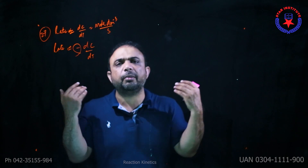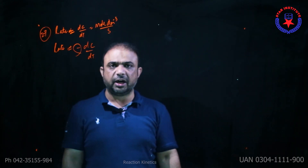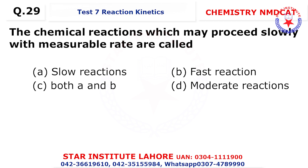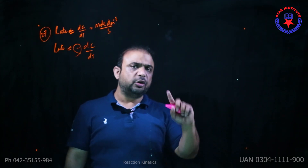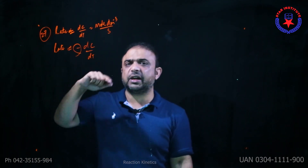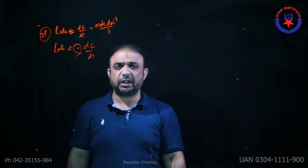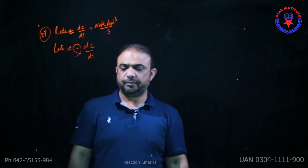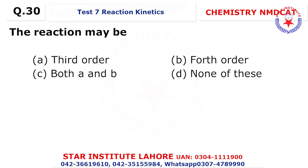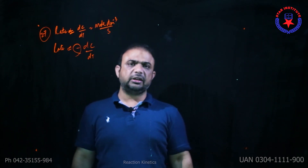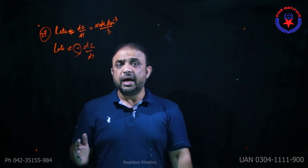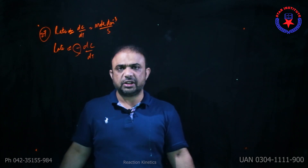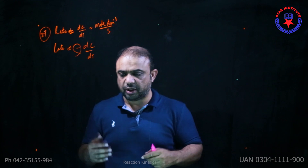Question 29: A chemical reaction which may proceed slowly within a measurable time is moderate. If time is difficult to measure, it is a fast reaction; if it requires more than the average human lifespan, it is a slow reaction. Question 30: The maximum value for the order of a reaction is three, because it is unlikely for four molecules to collide at one time, and even if they do, the collision is never fruitful — choice A.